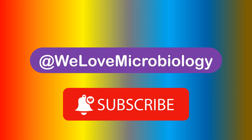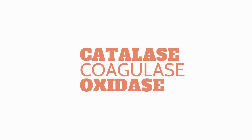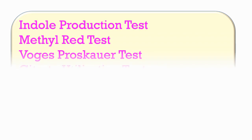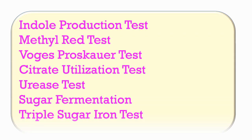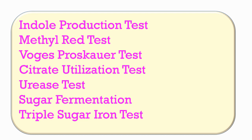Hello, welcome back to my channel. In my last video on biochemical reactions, we covered the catalase test, coagulase, and oxidase test. Today we will cover the indole production test, methyl red test, Voges-Proskauer test, and citrate utilization test. These four are also known as the IMViC tests. We will also cover urease, sugar fermentation, and triple sugar iron test in this video.